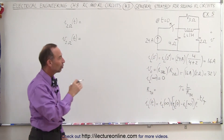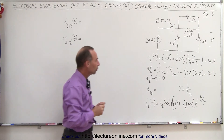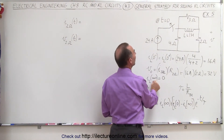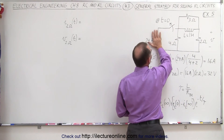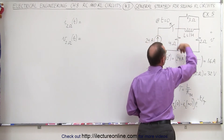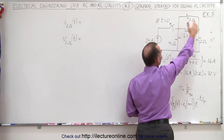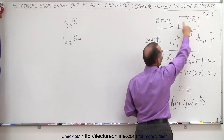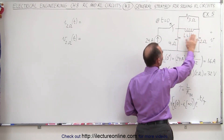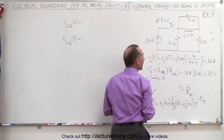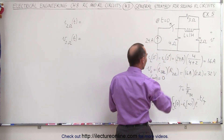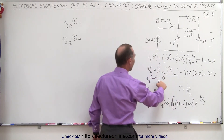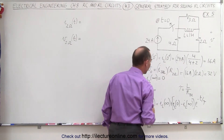Now the switch opens up. What will be the current through the inductor at infinite time? The switch is open, the current source no longer plays a role, and now we have current flowing through the circuit on the right side. Eventually the resistance will take out all the energy of the circuit and zero current will flow through the inductor. So I sub L equals zero.